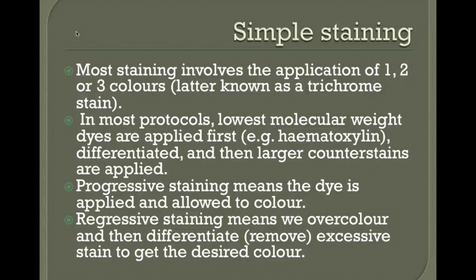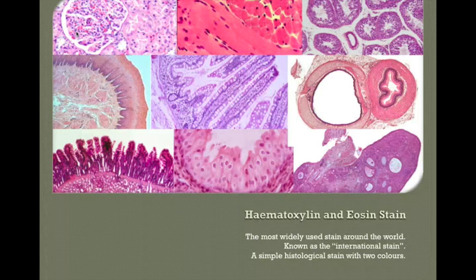There is some important terminology here. Progressive staining means we apply a dye and the colour gradually builds up over time. Regressive staining means the dye over-colours everything, and then we remove the excess by differentiating — often using an acid alcohol — to give us the desired colour.